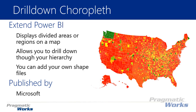For example, if you have a dataset that has states, counties, and maybe voting precincts, you can drill into each individual state, then down to the county, then down to the voting precinct. It can actually support up to three different layers inside the choropleth.